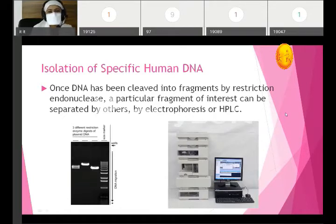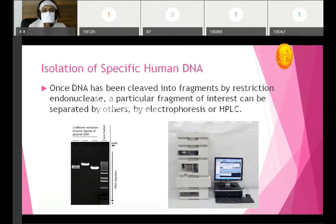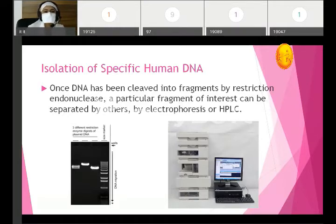The first step is now complete — fragmentation of DNA with the help of restriction endonuclease enzyme, which can cut giving either blunt ends or sticky ends. For recombinant DNA formation we require sticky ends so they can pair with another fragment of DNA. The second step is isolation of specific human DNA. Once DNA has been cleaved into fragments by restriction endonuclease enzyme, a particular fragment of interest can be separated by electrophoresis or HPLC.